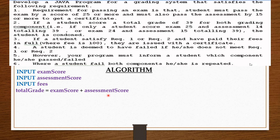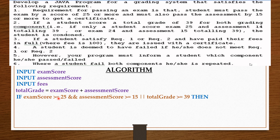From the question, a student must pass the exam by a score of 25 or more and must also pass the assessment by 15 or more to get a certificate. The second requirement was that if a student scores a total grade of 39 for both grading components, the student is condoned. So we say: if exam score is greater than or equal to 25 and assessment score is greater than or equal to 15, or total grade is greater than or equal to 39, then...